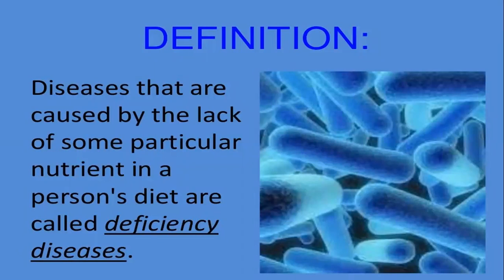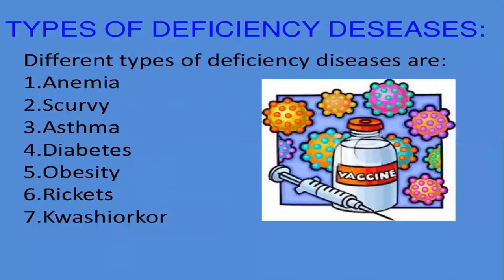We have already learned about the different types of nutrients and their functions in our body, and also about the balanced diet — why we should take a balanced diet and what is included in it. So let's see what happens if we are not taking particular nutrients in our diet — there will be a deficiency, and that deficiency will cause deficiency diseases. Different types of deficiency diseases are anemia, scurvy, asthma, diabetes, obesity, rickets, and kwashiorkor. Let's discuss them one by one.